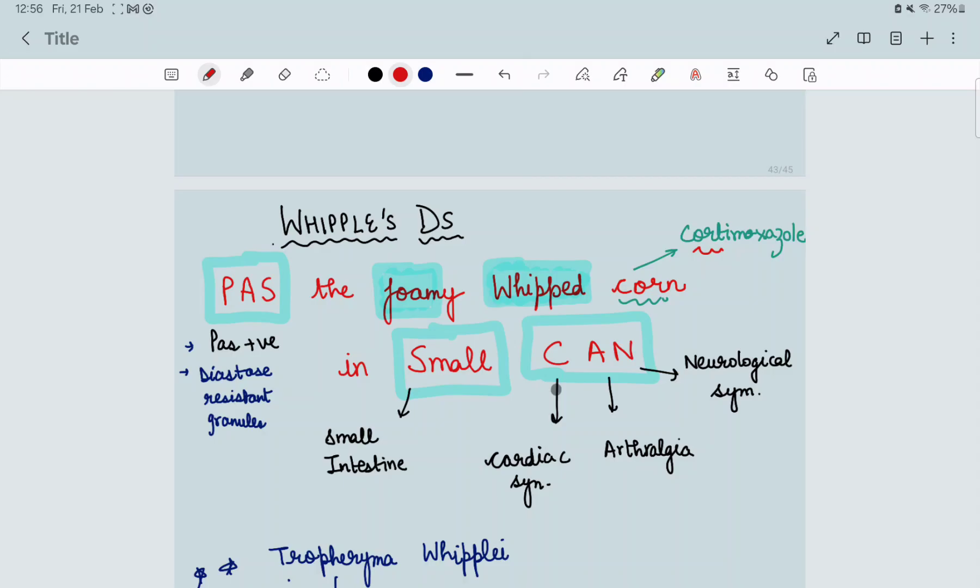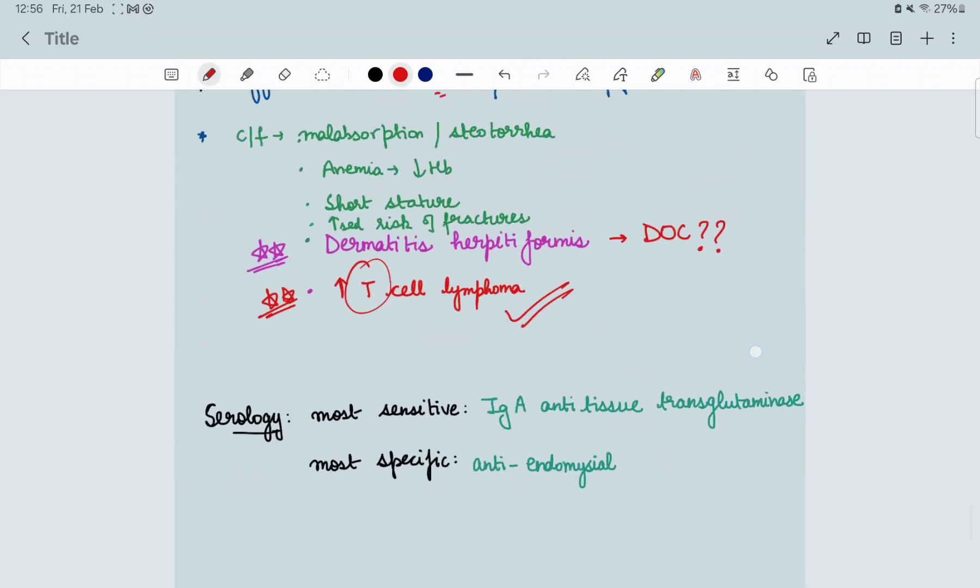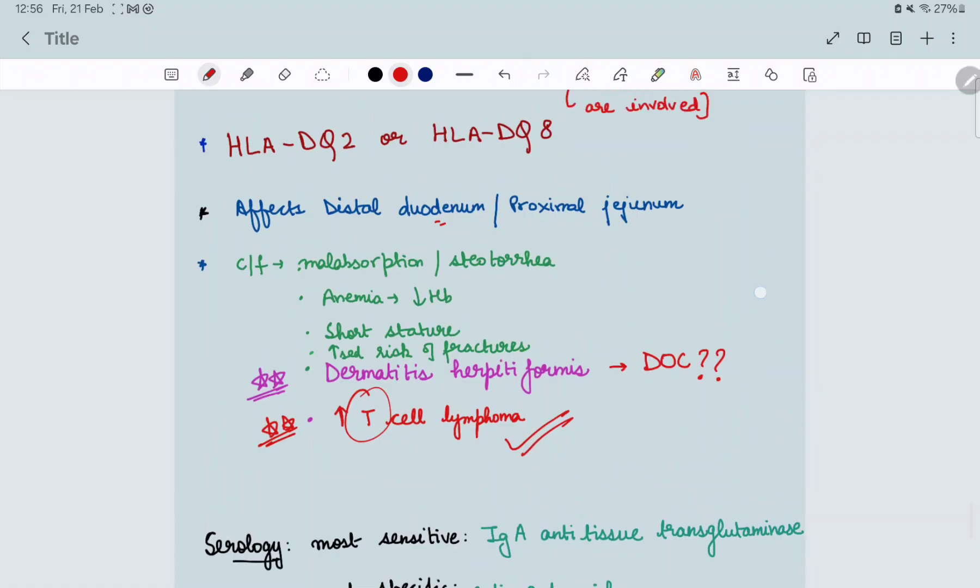In the macrophages which are present in the lamina propria, there will be presence of PAS positive, diastase resistant granules and rod shaped bacteria can also be seen but on electron microscopy. And the clinical features will remain same of that of malabsorption. And you have to tell me the answer of drug of choice for dermatitis herpetiformis.